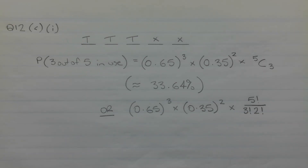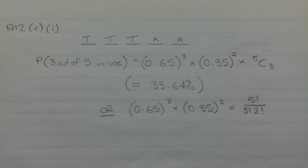It's given that the probability that a treadmill is in use at any particular time is 65%, or 0.65. By the law of complements, the probability that a treadmill is not in use at any particular time is one minus 0.65, which is equal to 0.35.